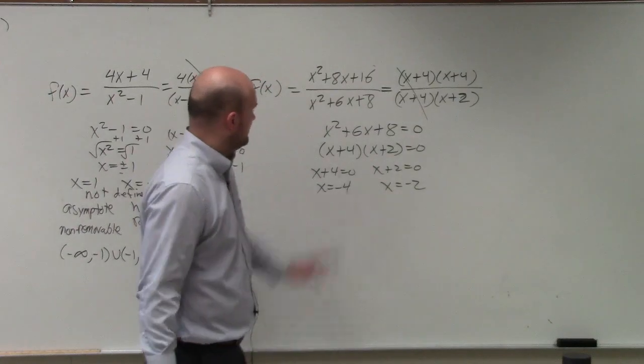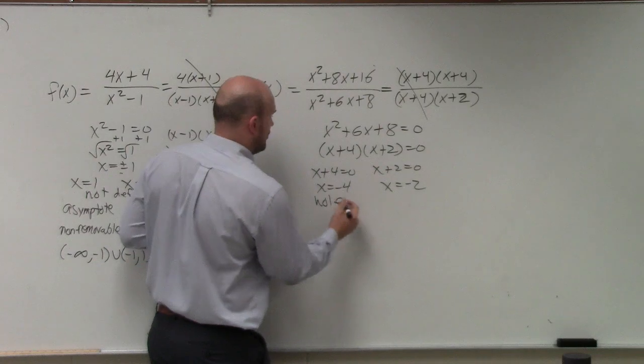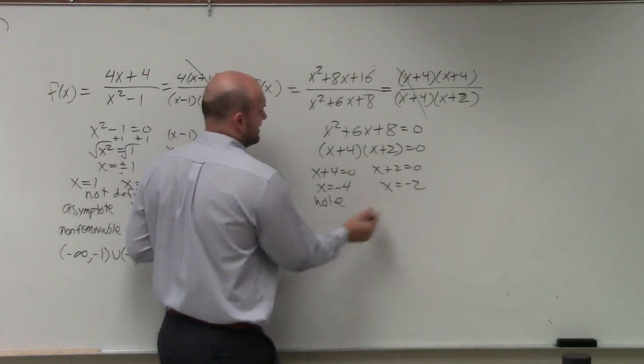The fours divide out. That means this is a hole. This is an asymptote.